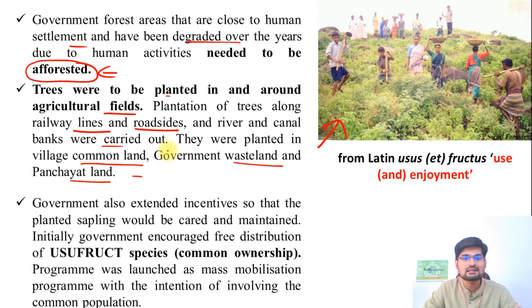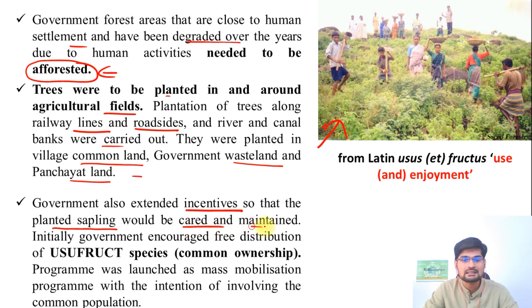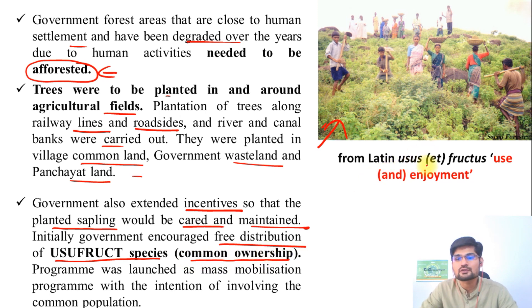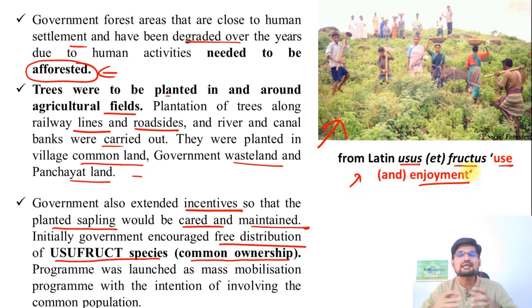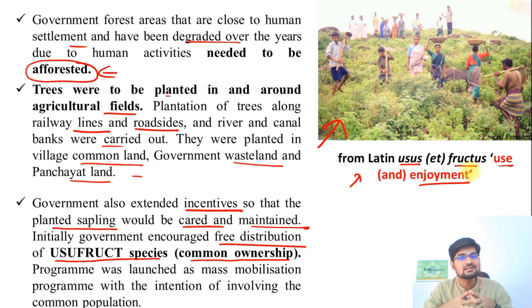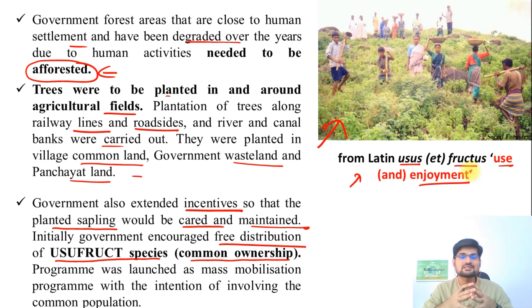The government also extended incentives so that more and more people could join, including the caring and maintenance of planted saplings. Initially, government encouraged free distribution of many species called usufruct species, which have common ownership. The word usufruct comes from the Latin words usus and fructus — meaning use and enjoy — so it's like a common property for all. Resources like mango trees, jamun trees, banana trees, and flowering trees where people can utilize them for their own purpose, including lots of fruit-bearing trees, were distributed under this scheme.